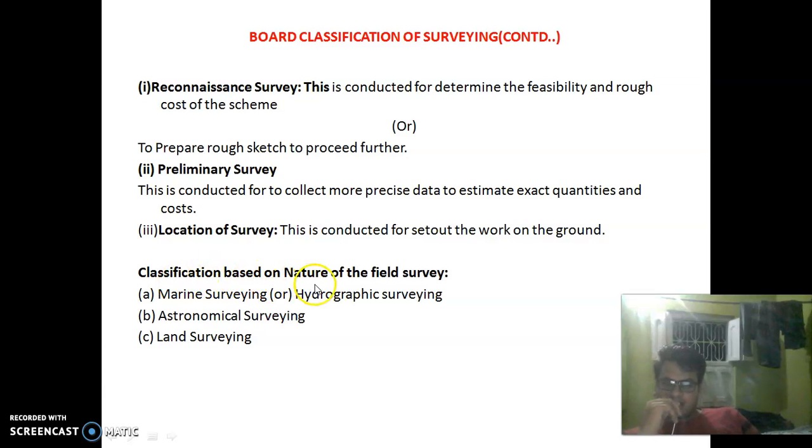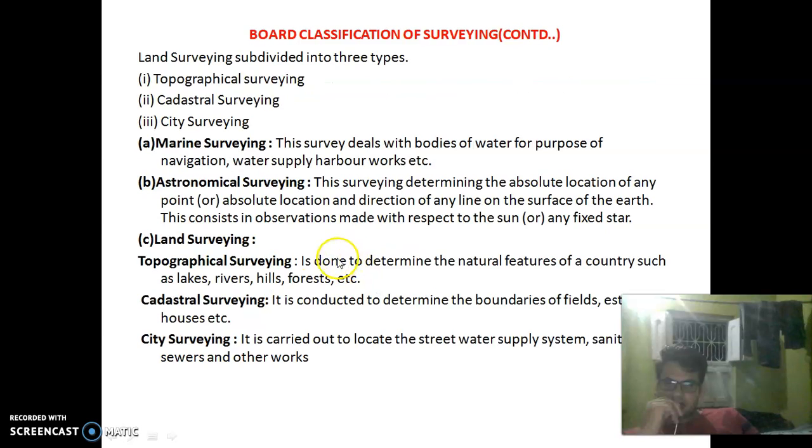Classification based on nature of the field survey includes Marine Survey or Hydrographic Survey, Astronomical Survey, and Land Survey. Land Survey is divided into three types: Topographical Survey, Cadastral Survey, and City Survey.